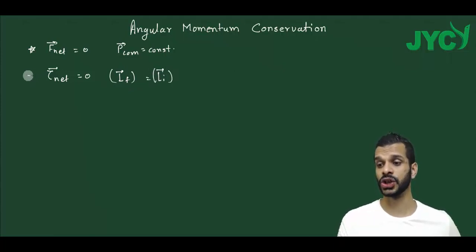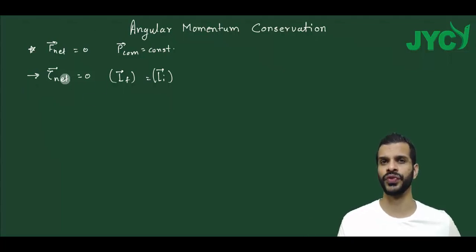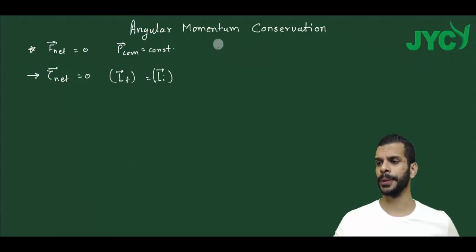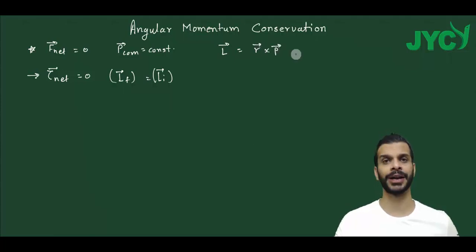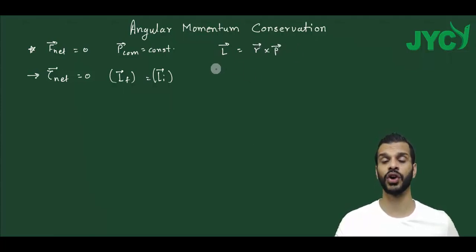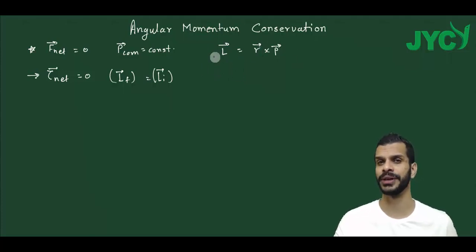This conservation holds when the net torque is zero. Now here is a small mathematical proof. Angular momentum L is defined as the position vector r-bar cross momentum p-bar. If I differentiate this with respect to time t, what will I get?